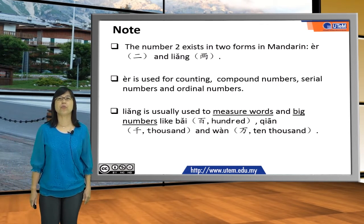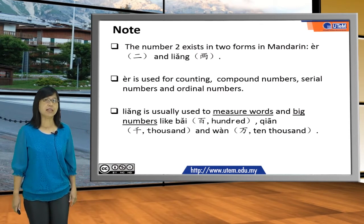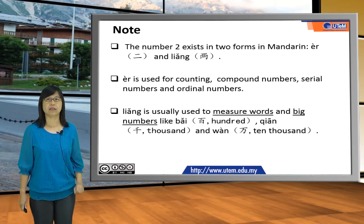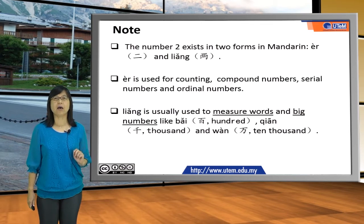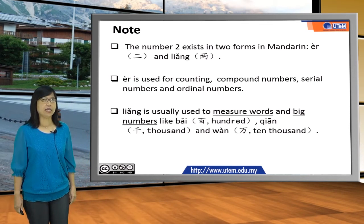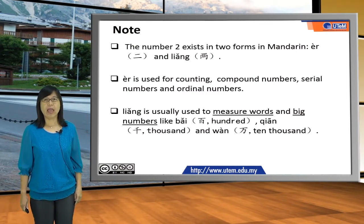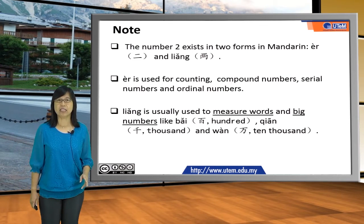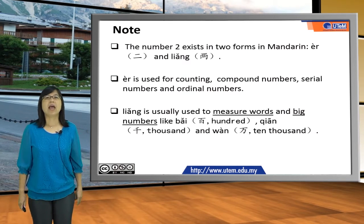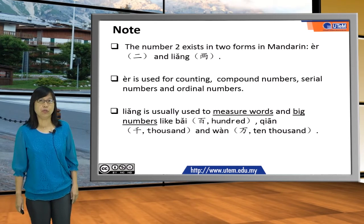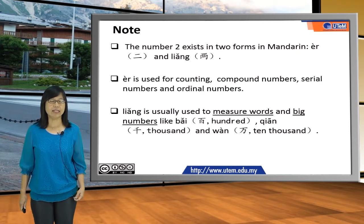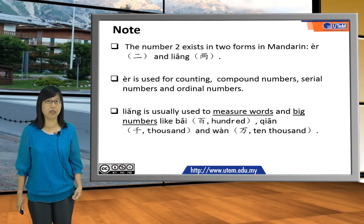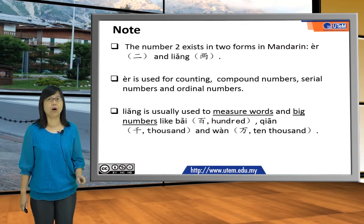两 is usually used with a measure word. For example, 'I have two younger sisters' — you have to say 我有两个妹妹. 两 is the measure word partner for 妹妹, so we use 两 instead of 二. 两 is also used for big numbers. Like for 100, we say 一百; for 200, we say 两百 or 二百.